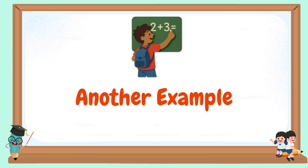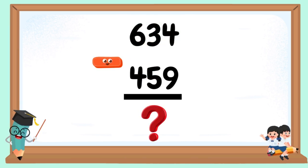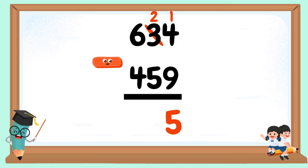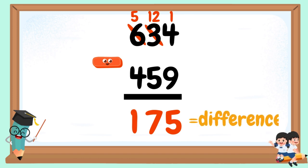Another example: 634 minus 459. 9 minus 4 cannot be done, so we need to borrow 1 from 3. The 3 will become 2, and 4 will become 14. 14 minus 9 equals 5. 5 minus 2 cannot be done, so we borrow 1 from 6. The 6 will become 5, and 2 will become 12. 12 minus 5 equals 7. 5 minus 4 equals 1. 175 is our difference.